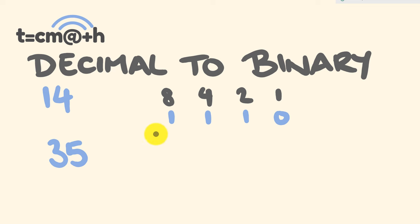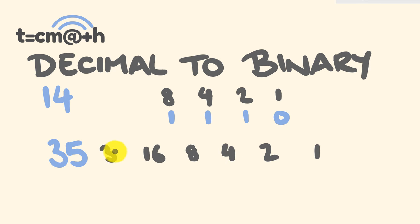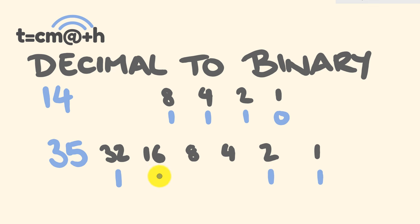For 35, we start doubling: 1, 2, 4, 8, 16, 32. We don't need to go any further. We always use this first number on the left — 32. To 32 you just need to add 3, and 3 can be made up of 2 and 1. The rest of these numbers get a 0 underneath. So 35 in binary is 1, 0, 0, 0, 1, 1.